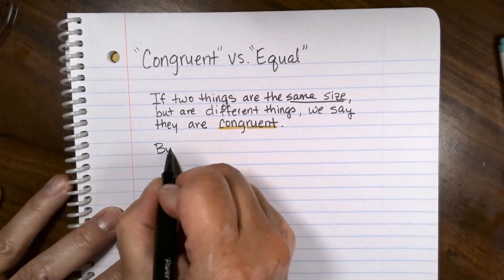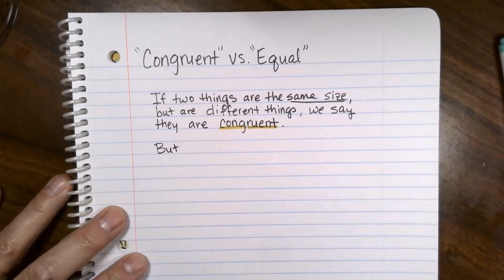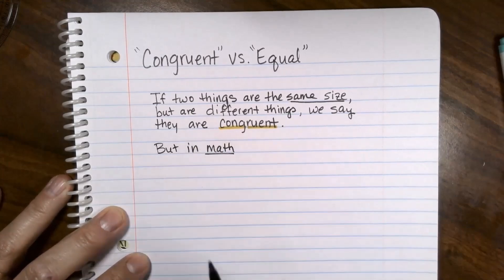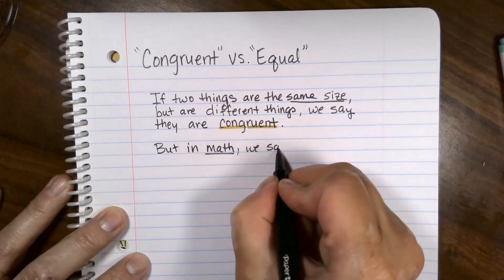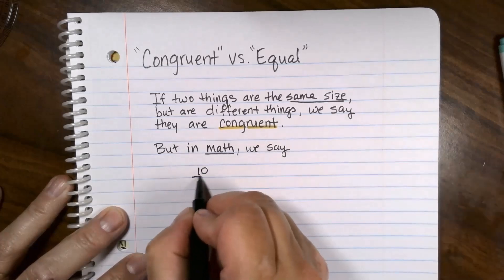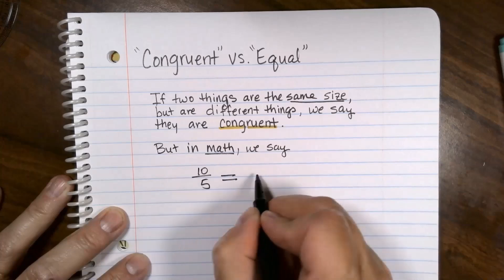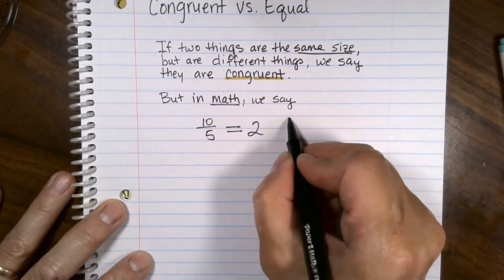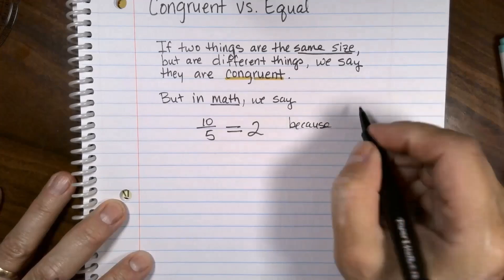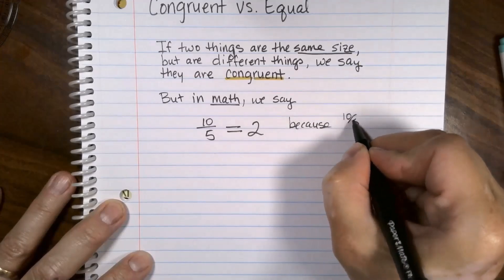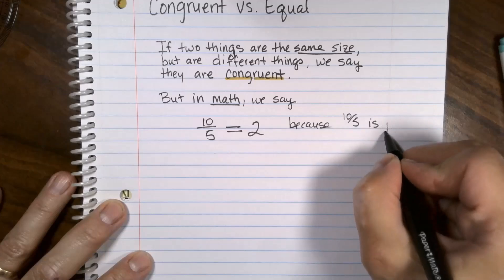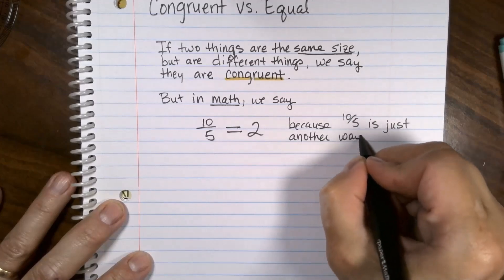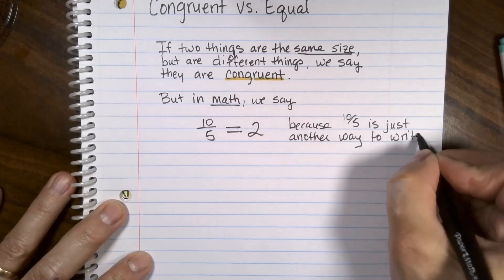The reason this is a little bit weird is because we're used to doing this sort of thing in math. So in math, we can say something like this: ten divided by five equals two. Not congruent, but they actually equal, and that is because ten over five is just another way to write two.